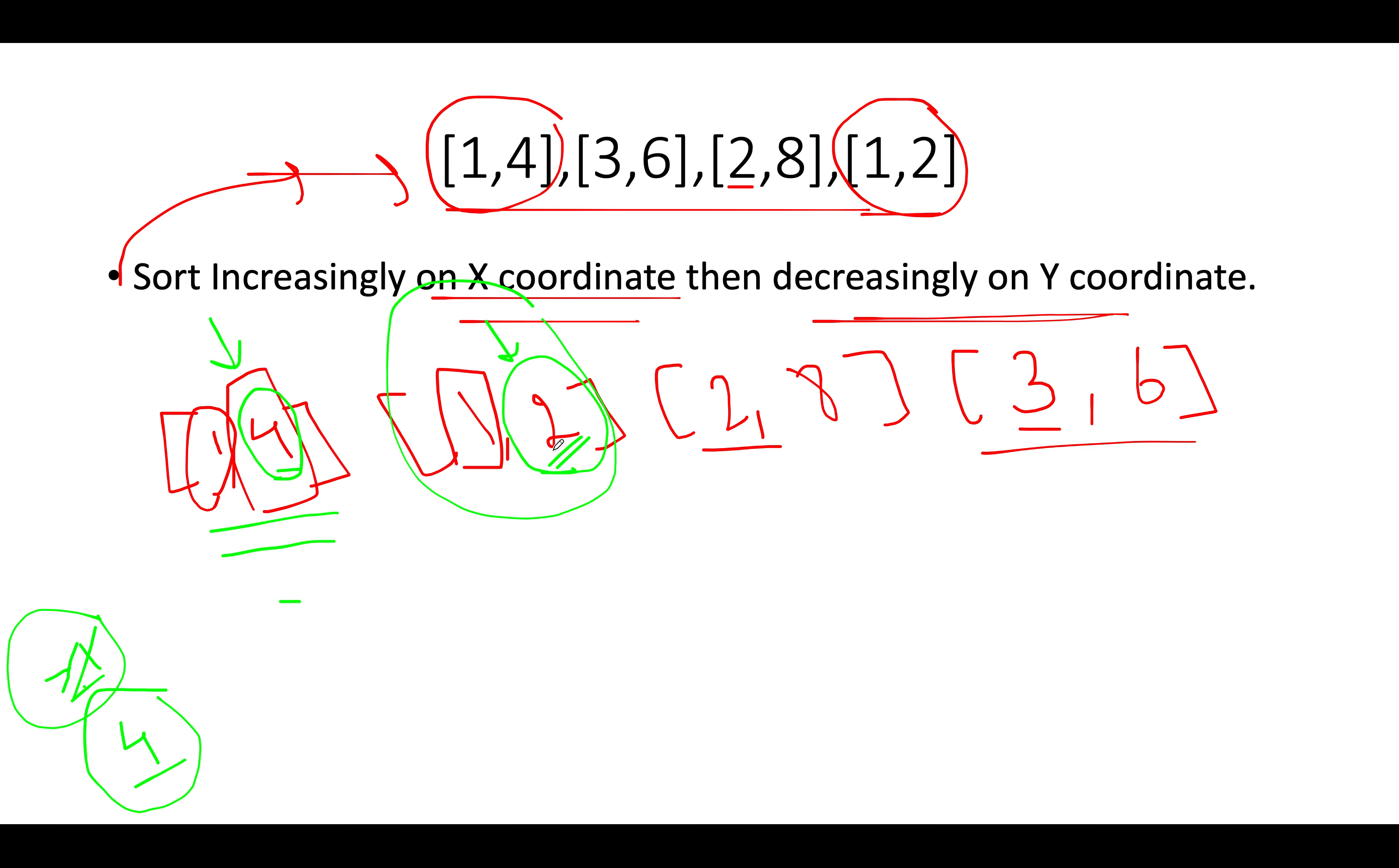Now let's look at the next entry. The next entry happens to be [1,2] and we will not look at the x coordinate because we know it's already increasing in nature. We are only interested in looking at the y coordinate range. So what is the value here? The value is 2 and the current max range that we have reached happens to be 4. That means we can simply eliminate this variable. This is not needed. It is already covered by some other entry in the past.